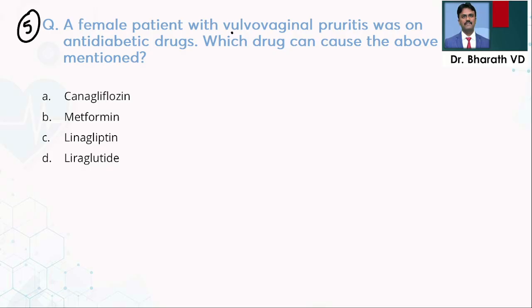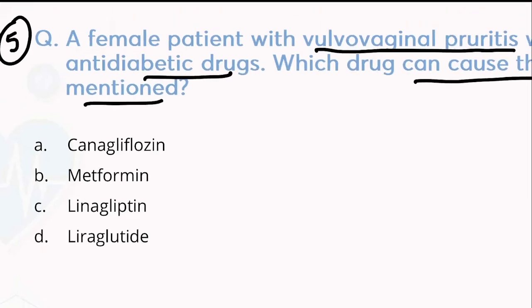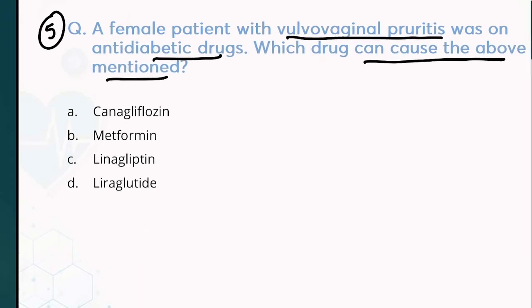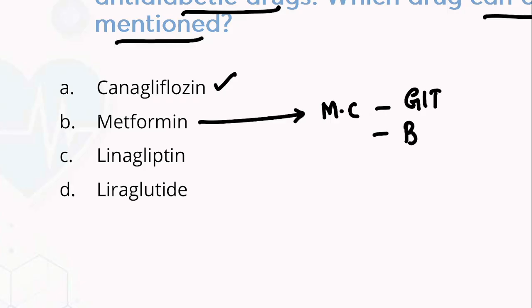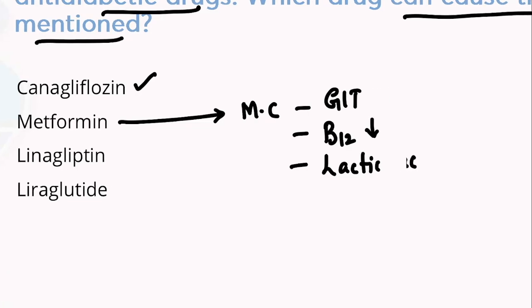Fifth question: a female patient with vulvovaginal pruritus was on anti-diabetic drugs. Which drug can cause this problem? Options: canagliflozin, metformin, linagliptin, liraglutide. The answer is canagliflozin — because of the gliflozin class. For metformin (a biguanide), the most common adverse effect is GI upset and diarrhea; it can also cause B12 deficiency and rarely lactic acidosis. Unexplained diarrhea on an anti-diabetic drug points to metformin.